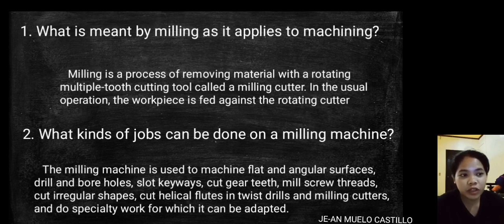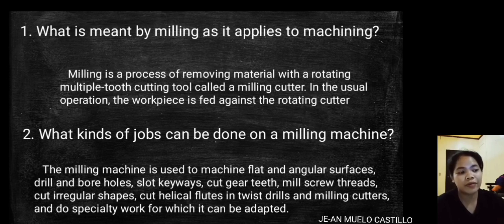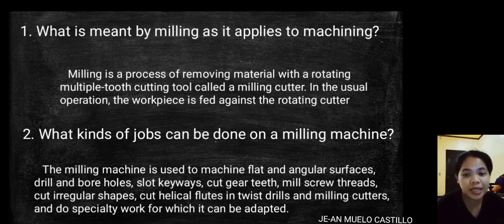What kind of jobs can be done on a milling machine? The milling machine is used to machine flat and angular surfaces, drill and bore holes, slot keyways, cut gear teeth, mill screw threads, cut irregular shapes, cut helical flutes on piece drills and milling cutters, and do specialty work for which it can be adapted.